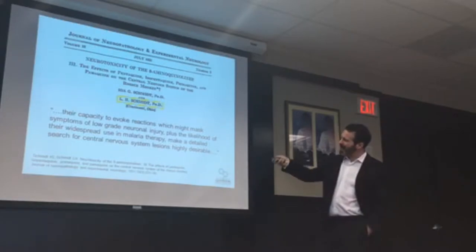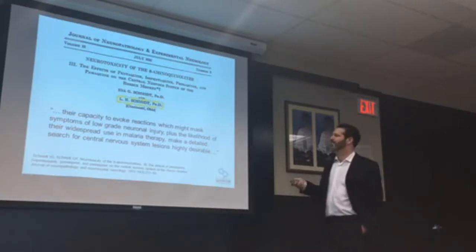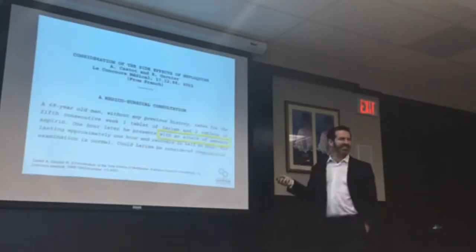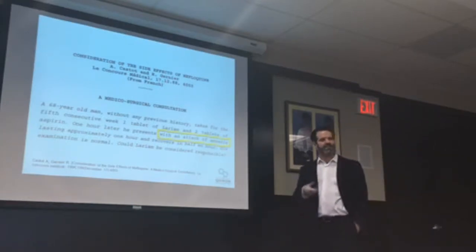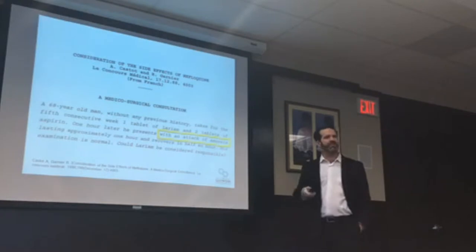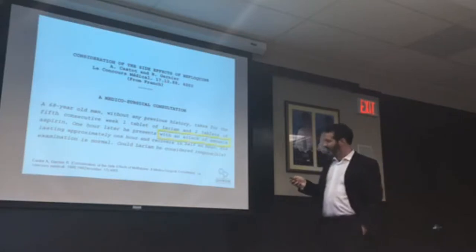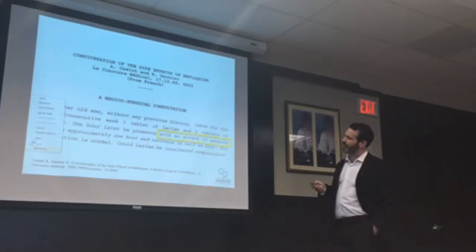Schmidt wrote: their capacity to evoke reactions which might mask symptoms of low-grade neuronal injury, plus the likelihood of their widespread use in malaria therapy, make a detailed search for central nervous system lesions highly desirable. And unlike all the testing done on these drugs in World War II — where they gave them to monkeys and chopped the brain stems up and looked under the microscope to see if the drugs were causing brain stem injury — they never once did any sort of monkey neurotoxicity testing with mefloquine. They will say it's a different class — it's a 4-quinoline methanol, not an 8-aminoquinoline — but that's beside the point because it's all drugs of the class that have this property.